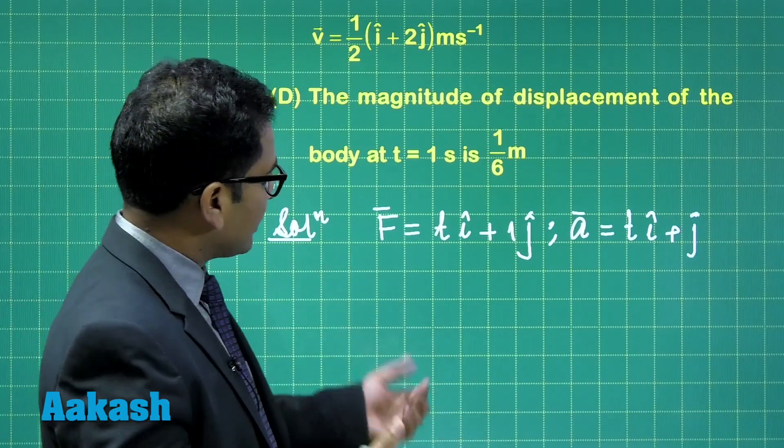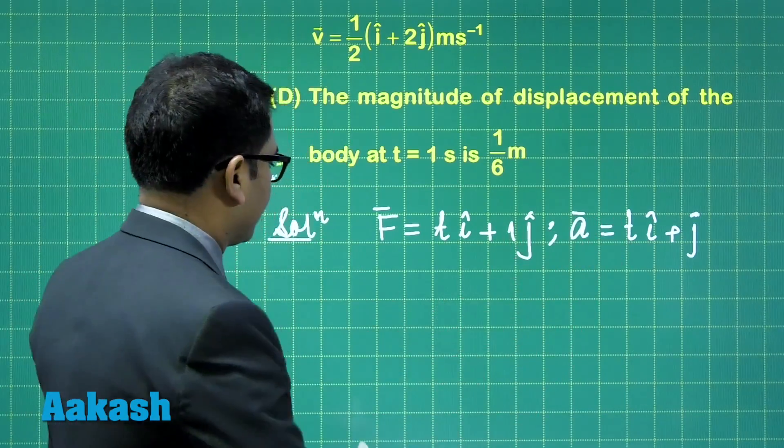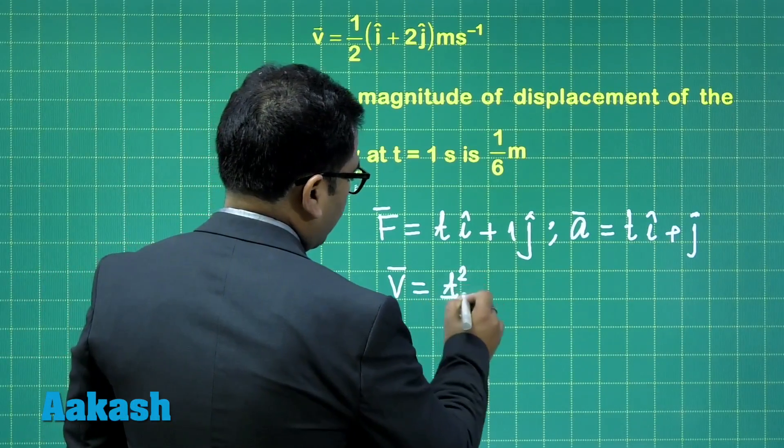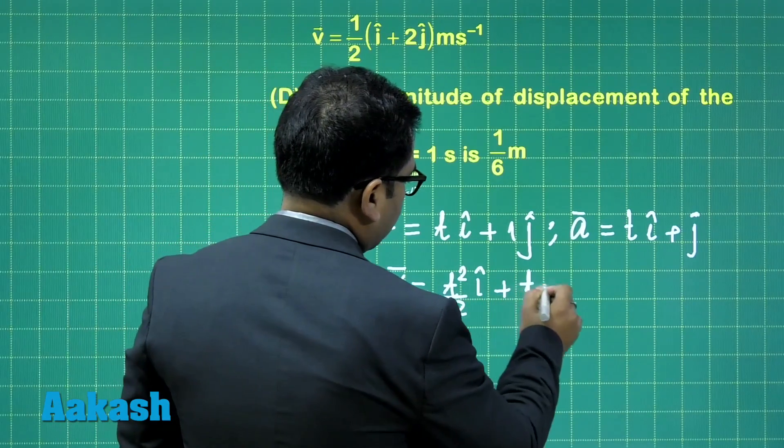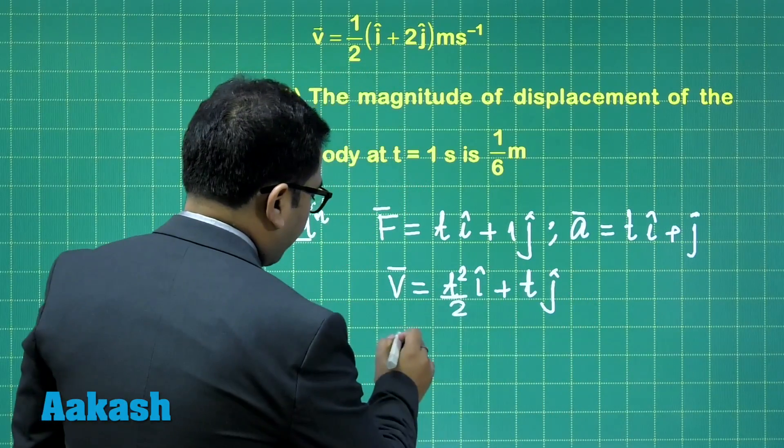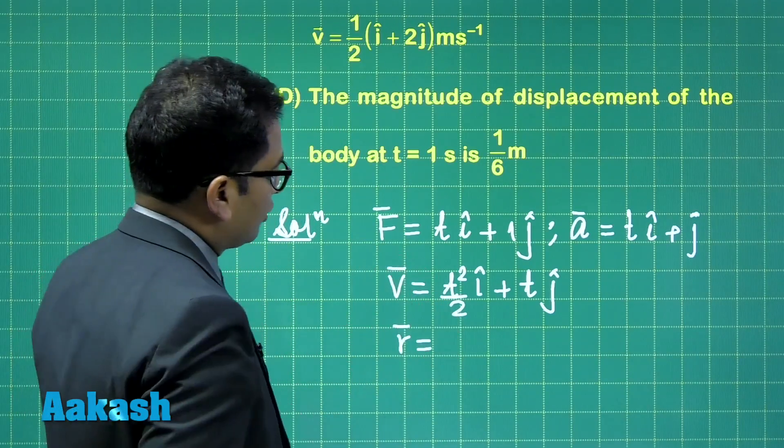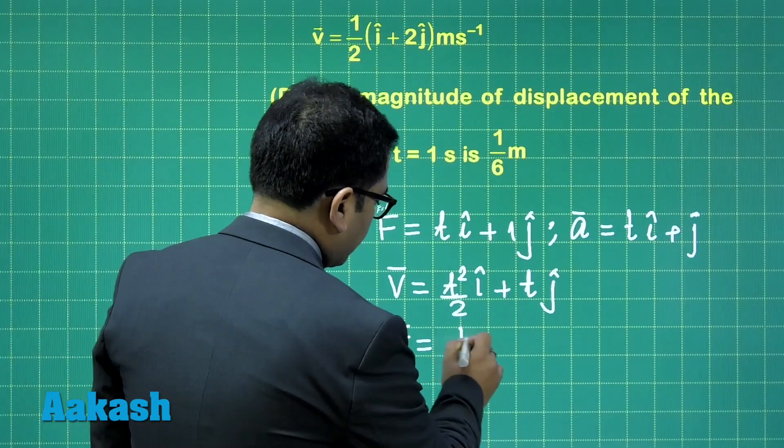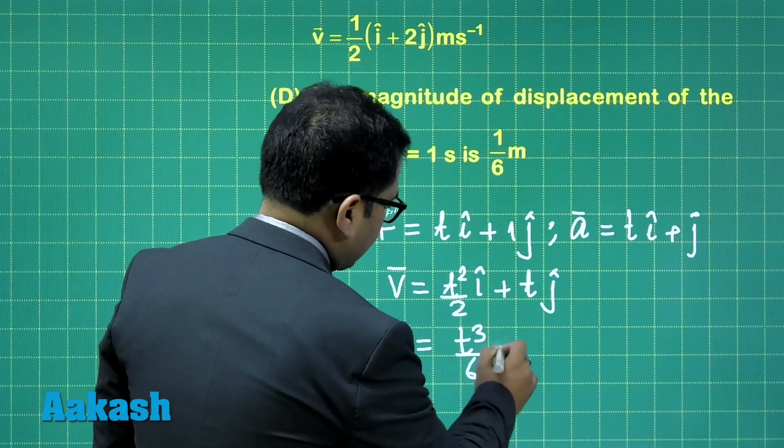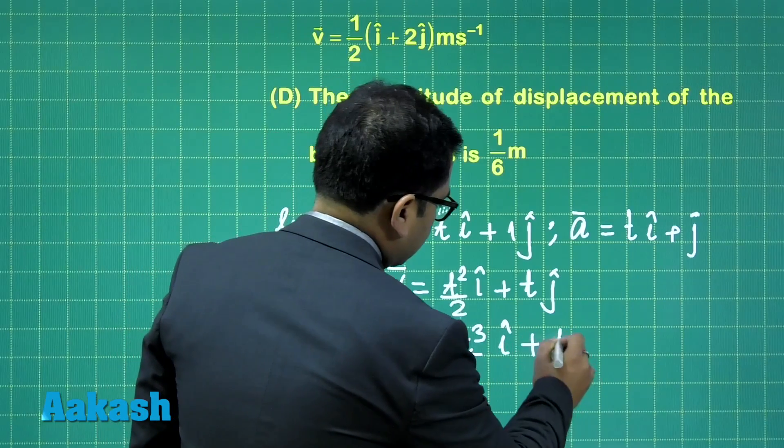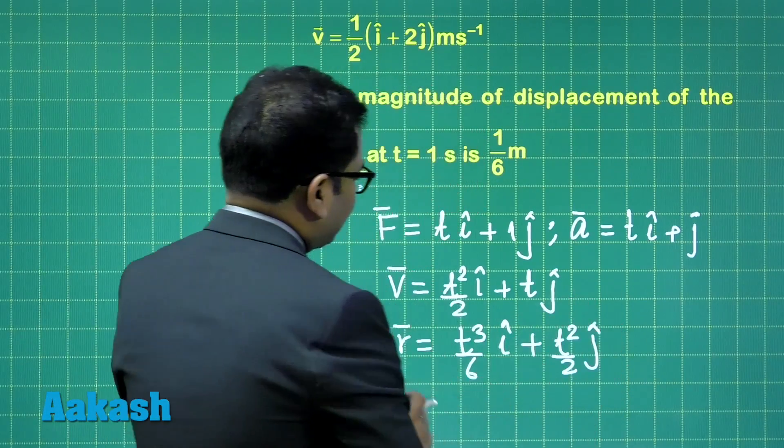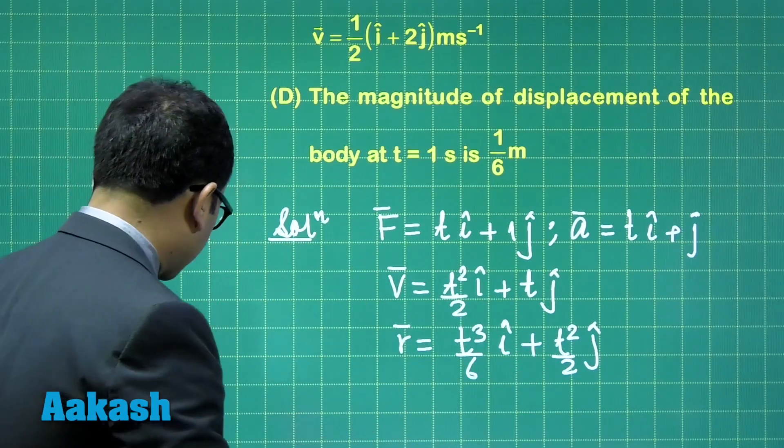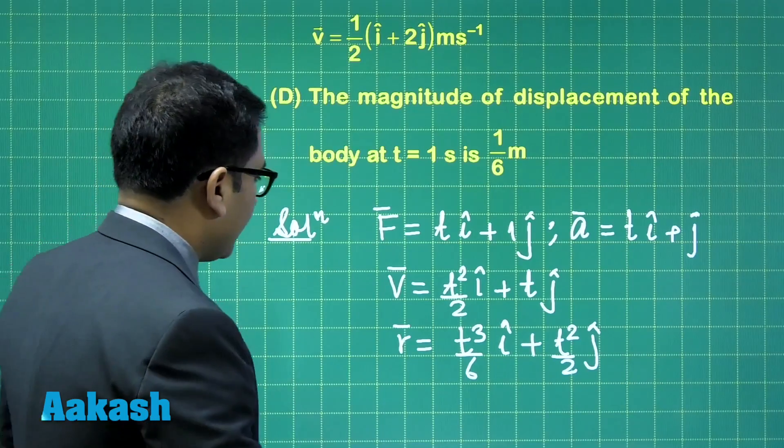Now, starting from rest, so you just need to integrate it. That's not a big deal. Therefore, I'm doing it directly. v equals to t square by 2 i cap plus of t j cap. And the final position, because initial position is at origin, is the simple integration of this. And this is going to give me t cube by 6 i cap plus t square by 2 j cap. Everything is done there. The velocity has been calculated. The final position has been calculated.